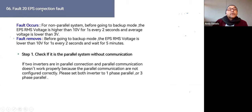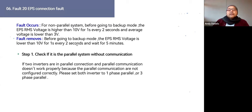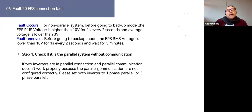Fault 20 is an EPS connection fault occurring in a non-parallel system. Before going to backup mode, the fault triggers if the EPS RMS voltage is higher than 10 volts for one second every two seconds and the average voltage is lower than 3 volts. If two inverters are in parallel but the parallel communication is not configured correctly, make sure both inverters are set to the same phase — single-phase parallel or three-phase parallel.